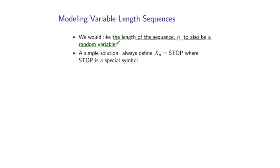And there's actually a very simple solution to this, a direct extension of second-order Markov processes or first-order Markov processes for that matter. We'll essentially just say that the nth random variable is always equal to STOP where STOP is a special symbol. It's special in that it is not in the regular vocabulary in the Markov process. It's not a member of the set V. It's sort of an additional symbol. And it's only ever seen at the end of a sequence.